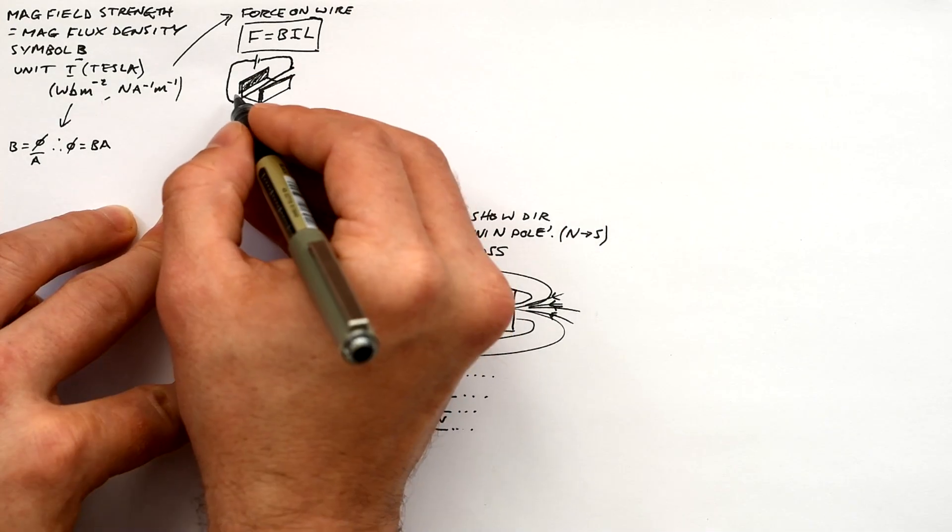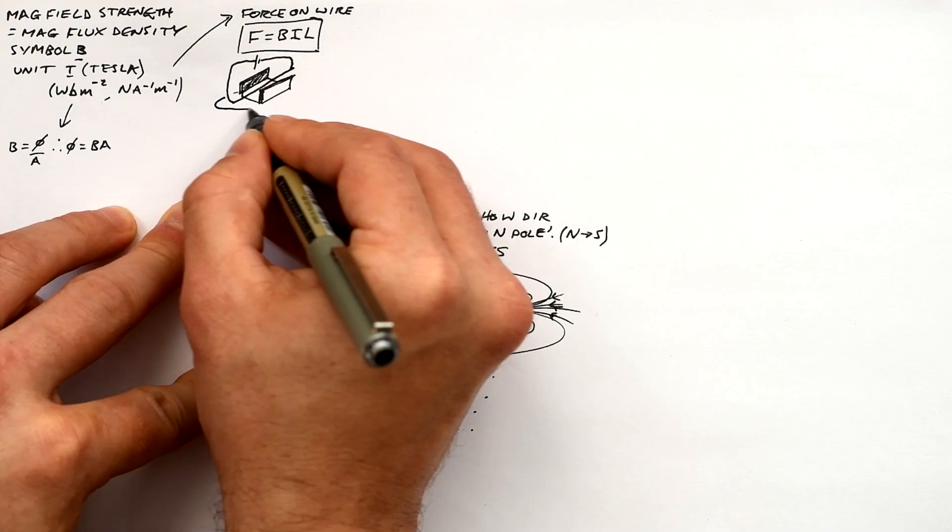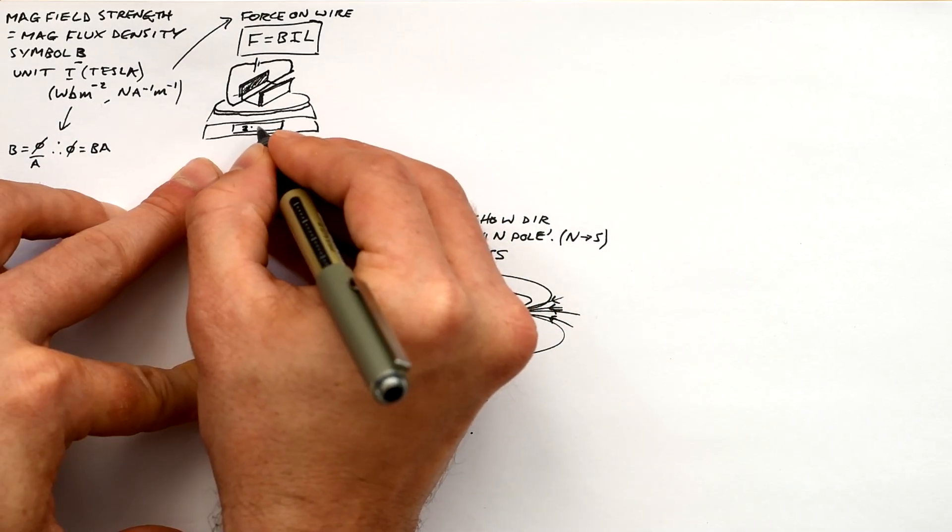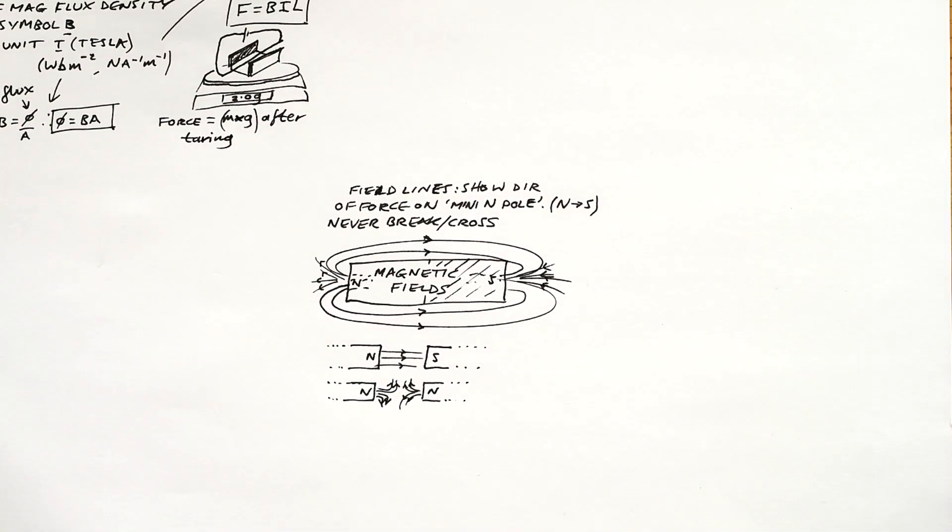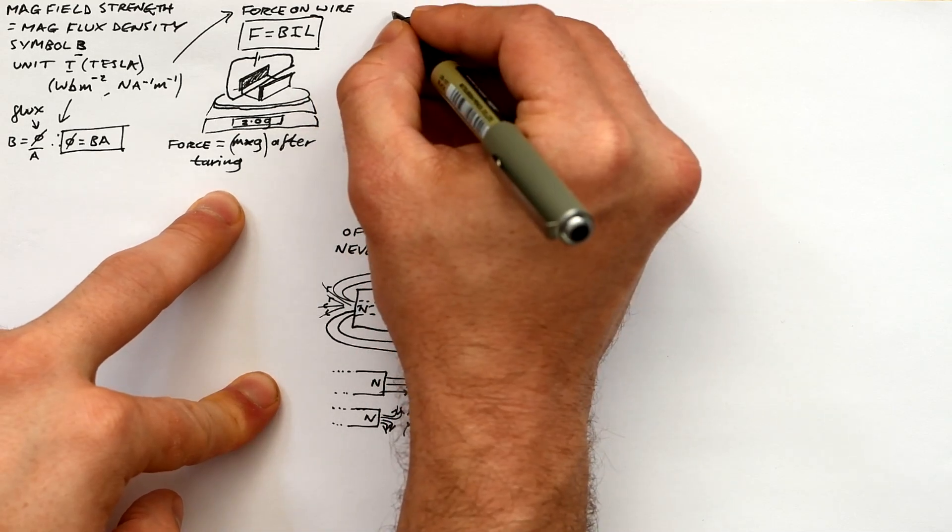We can measure this force by putting magnets on a yoke, putting that on a top-pan balance, put a current through the wire and then we can record what mass the balance shows and then we can times that by 9.81 times by g to find the force that is acting on the wire.